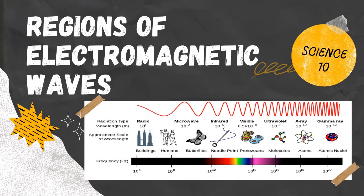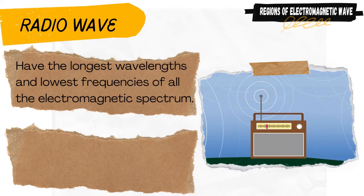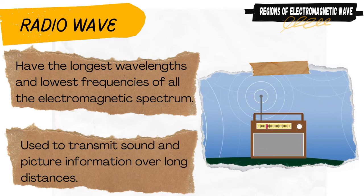Regions of electromagnetic waves. Radio and TV waves have the longest wavelengths and the lowest frequencies in the electromagnetic spectrum. They can be produced by making electricity oscillate in an aerial or antenna and are used to transmit sound and picture information over long distances.